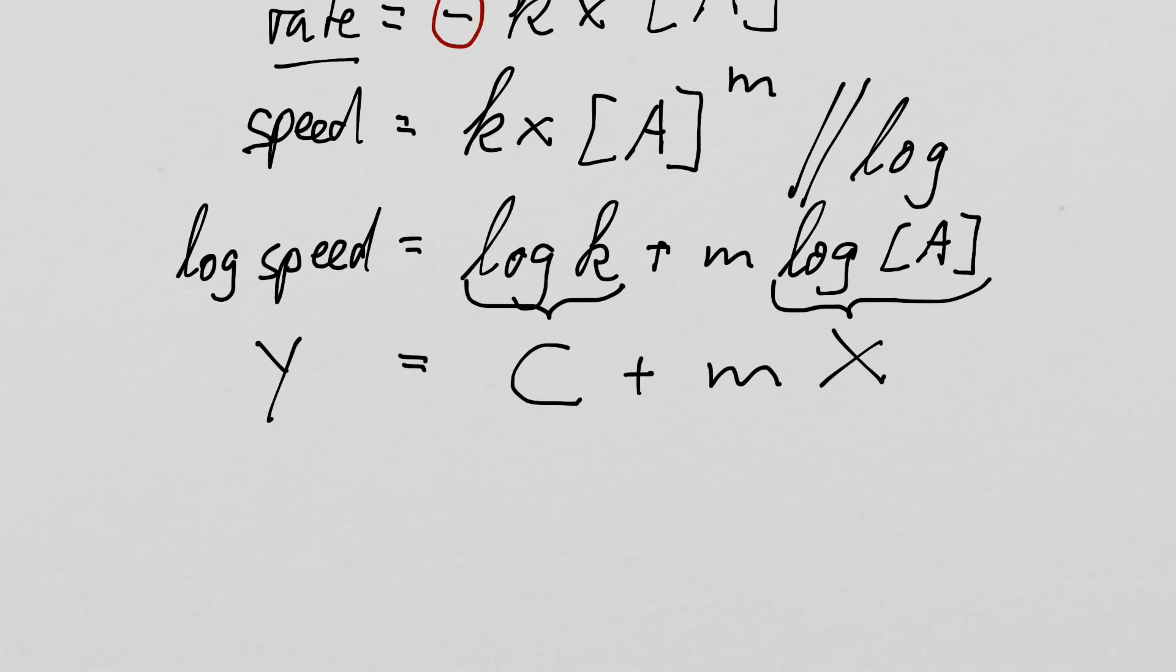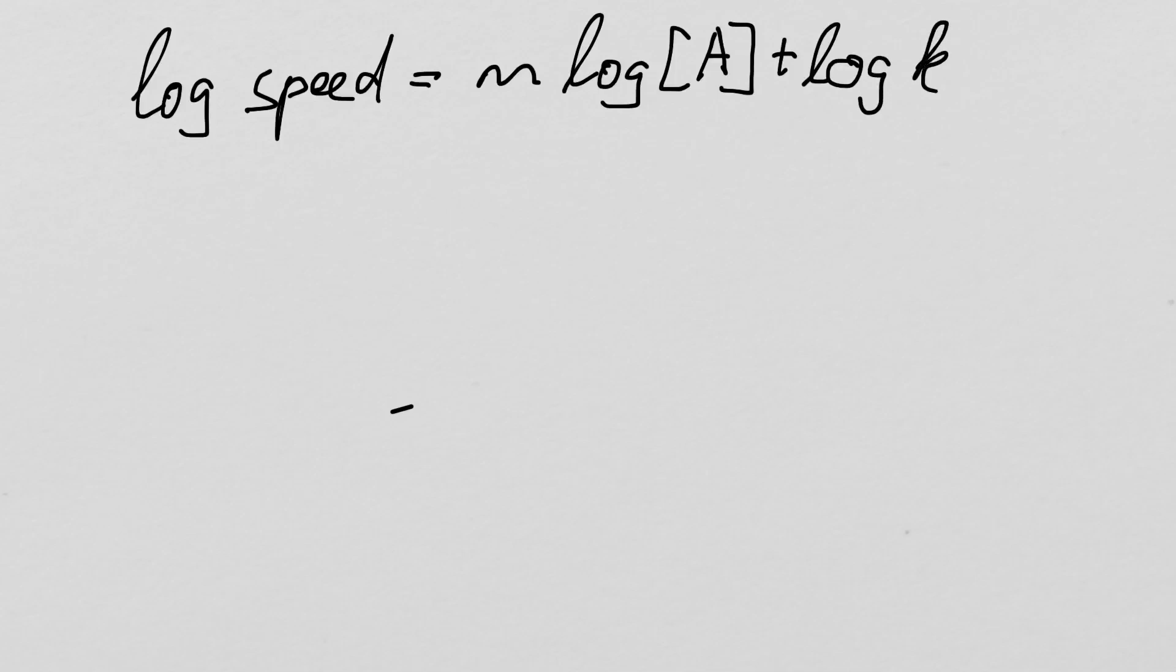So what we can do now is, let me write this down here again: log speed equals m log[A] plus log k. So we can now determine graphically our rate constant.